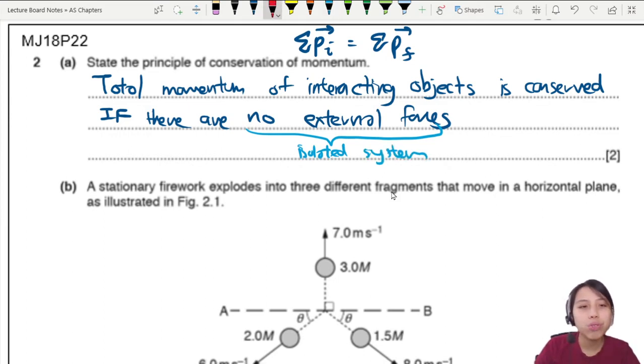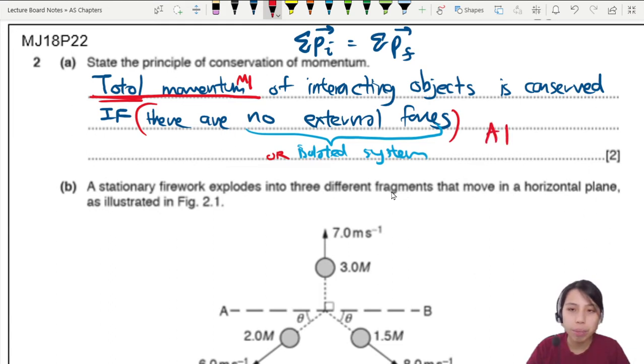So two marks. One comes from total momentum. The word total is important here. It's usually an M1. And you talk about the condition if there are no external forces or it's an isolated system. So this one is an A1 mark. You must get the M1 in order to get the A1.